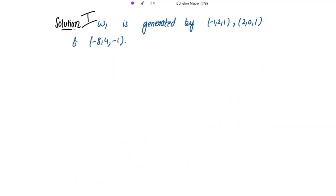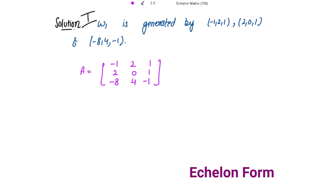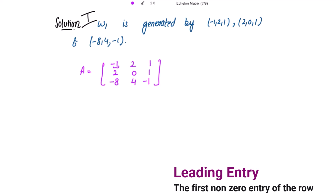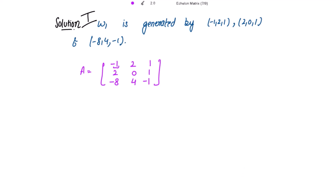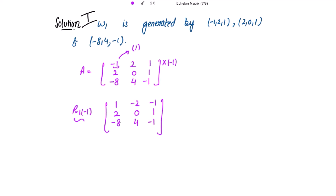To find the basis for W1, we write these three generating vectors in matrix form. We need to reduce this matrix to row echelon form. The leading entry of the first row is negative one — the leading entry is the first non-zero element in the row. We multiply row one by negative one, so the leading entry becomes one.